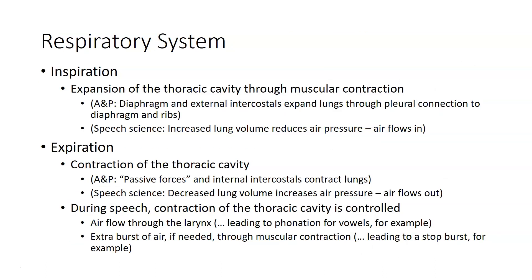In the respiratory system, we have two primary processes. One is inspiration — bringing air into the lungs by expanding the thoracic cavity. We do that through muscular contraction, using primary muscles like the diaphragm and the external intercostals to expand the lungs through their pleural connection to the diaphragm and the ribs. Increasing lung volume reduces air pressure and causes air to flow into the lungs.